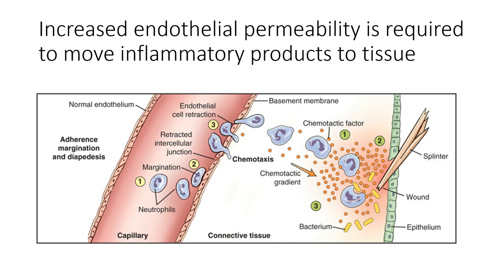In order for inflammatory products to leave the blood and move into the tissue, endothelial cells need to increase in permeability. Endothelial cells create a tight layer preventing substances from moving from the blood into the tissue. During inflammation, signals such as those from platelets tell the endothelial cells to increase the space within the endothelial layer, allowing white blood cells to squeeze through from the blood into the tissue to attack the site of injury and promote healing. This process is called extravasation.